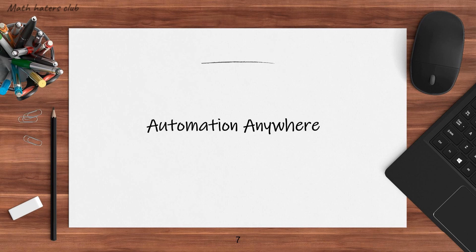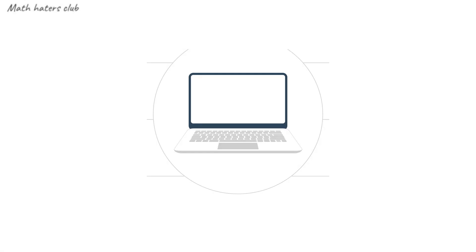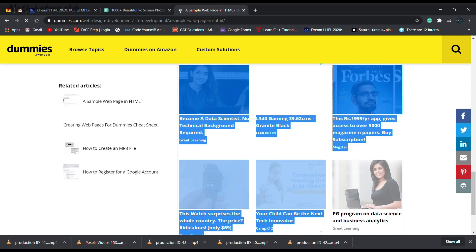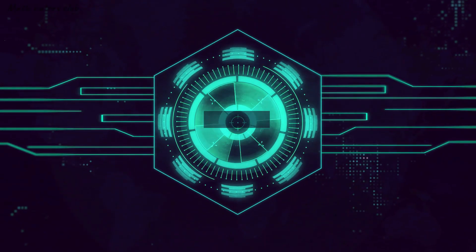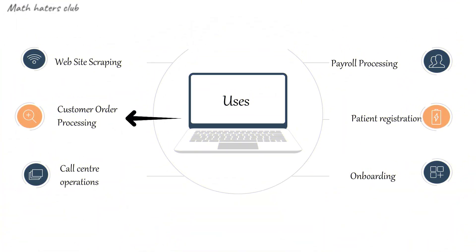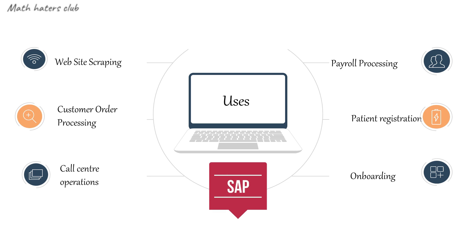In Automation Anywhere, you can learn everything from scratch. Some RPA use case examples include Website Scraping — extracting data from web pages — and filling online forms automatically. This is called Web Automation. For customer order processing, companies use software like SAP, and we can automate that too.